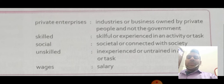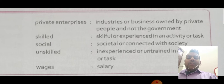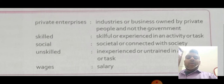Next is 'social' — societal or connected with society. ऐसे लोग, ऐसी group, ऐसी community जो society से बहुत अच्छे तरीके से connected हो, बहुत अच्छे से interaction करते हों और जिनका एक relation society के साथ हो — ऐसे लोगों को social कहा जाता है। Next is 'unskilled' — inexperienced or untrained in any activity or task. किसी भी काम करने के लिए जिनके पास कोई experience या training ना हो, ऐसे लोगों को हम unskilled कहते हैं।